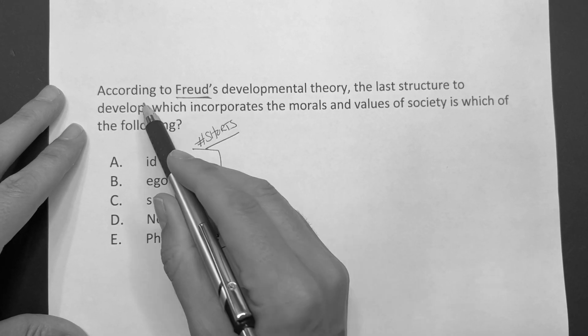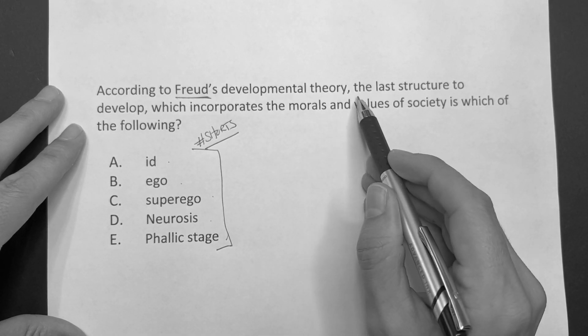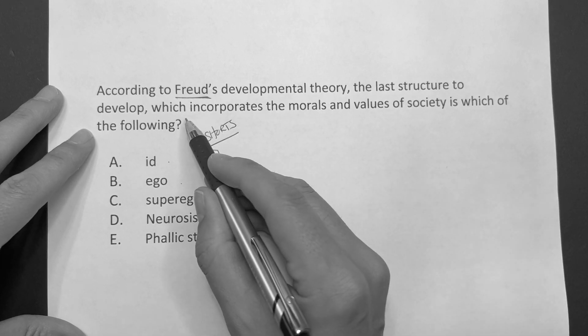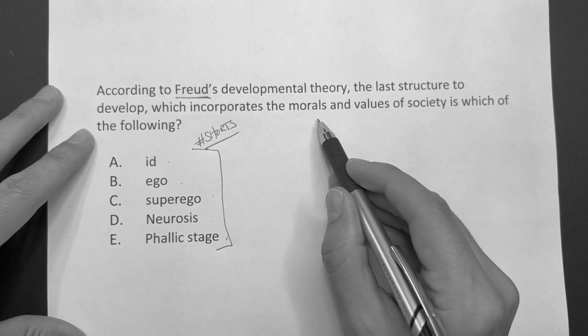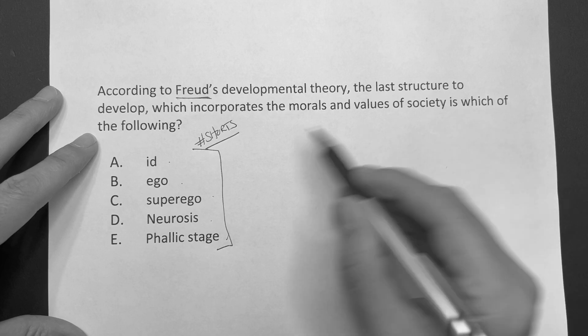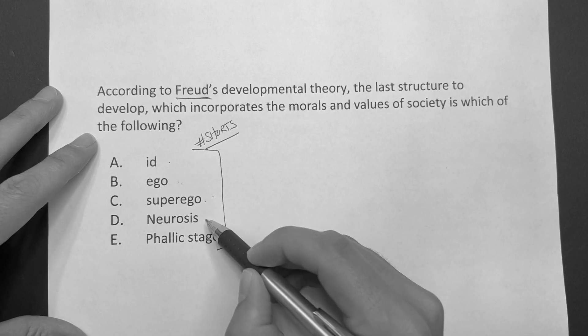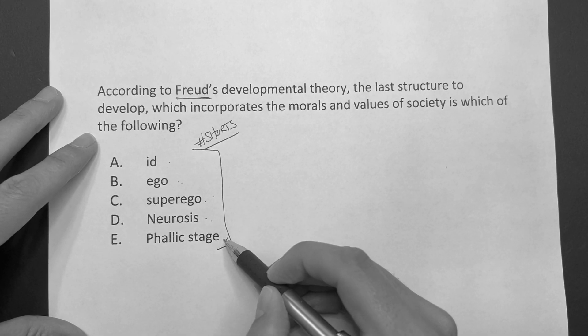So this question reads, according to Freud's developmental theory, the last structure to develop which incorporates the morals and values of society is which of the following? Is it the id, the ego, the superego, the neuroses, or the phallic stage?